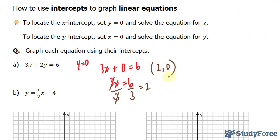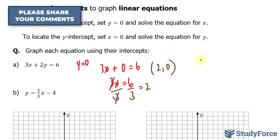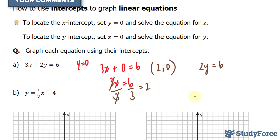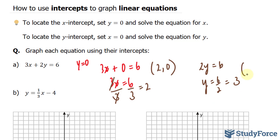I'll plot this in a moment, but first I want to find the y-intercept. To find the y-intercept, we set x equal to 0. This gives us 2y is equal to 6. Dividing both sides by 2, I end up with y equals 6 divided by 2, and that's 3. So another intercept will be at (0, 3).